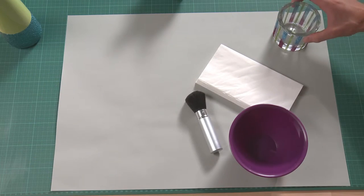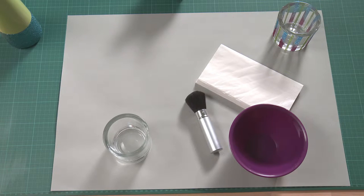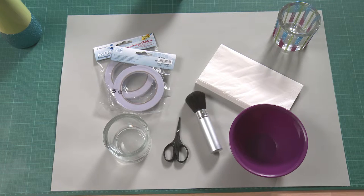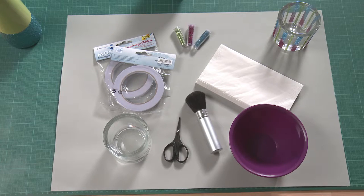For a lantern with glittery effects, you need a glass, a pair of scissors, double-sided adhesive tape as well as various glitter colors.